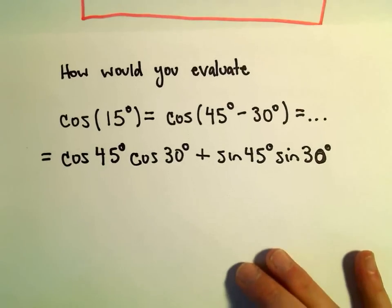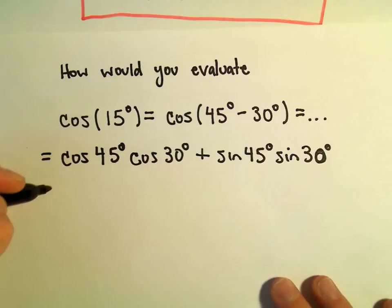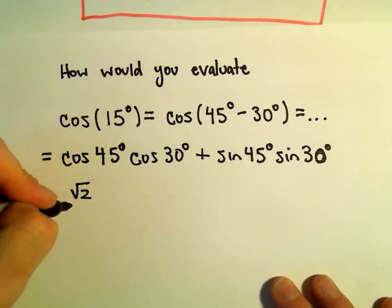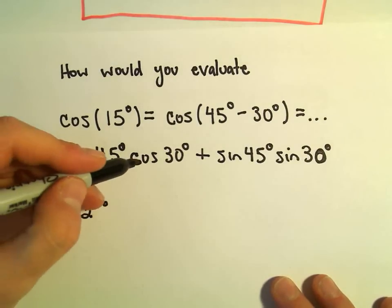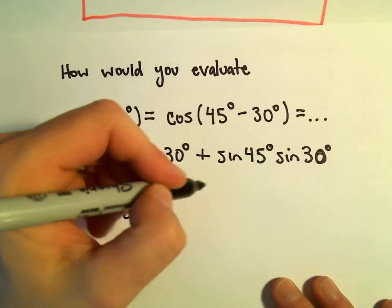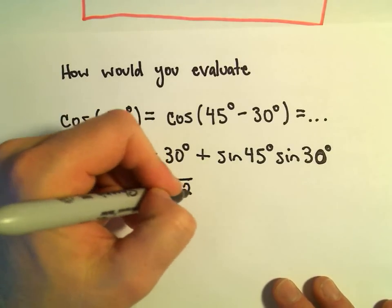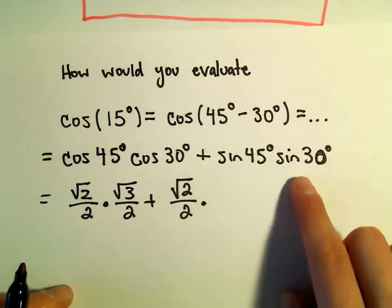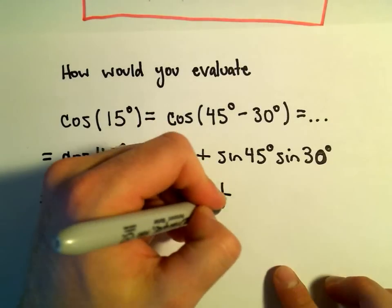And now it's just, again, kind of knowing some trig values. So cosine of 45 degrees is root 2 over 2. Cosine of 30 degrees is going to be root 3 over 2. Sine of 45 degrees, again, root 2 over 2. Sine of 30 degrees is going to be 1 half.